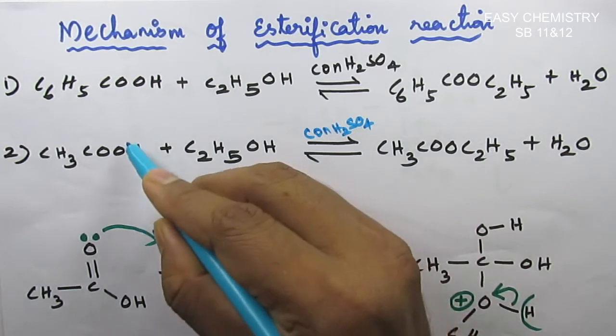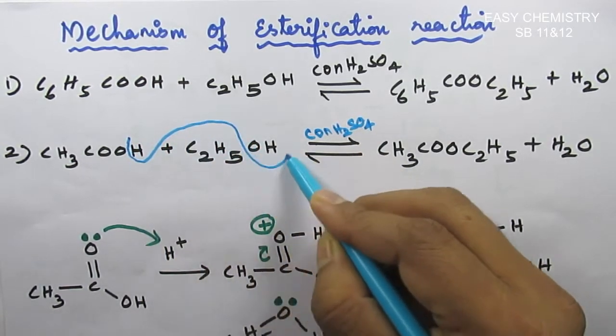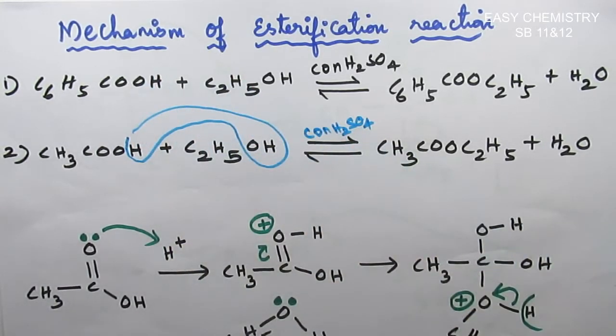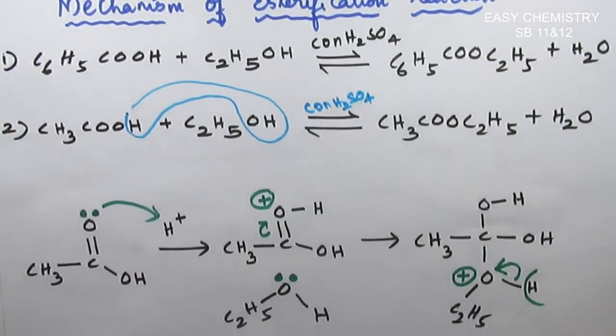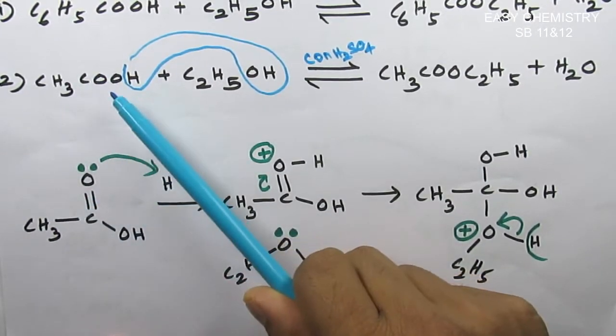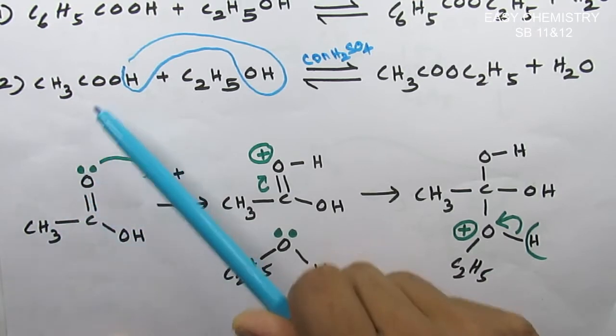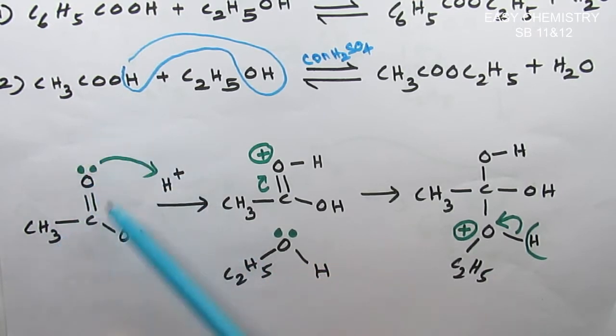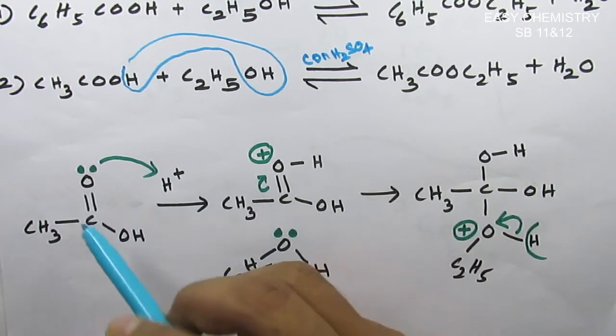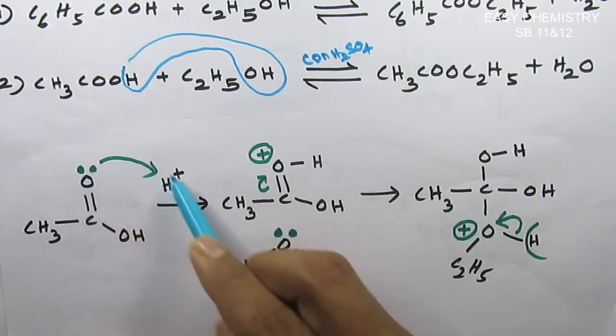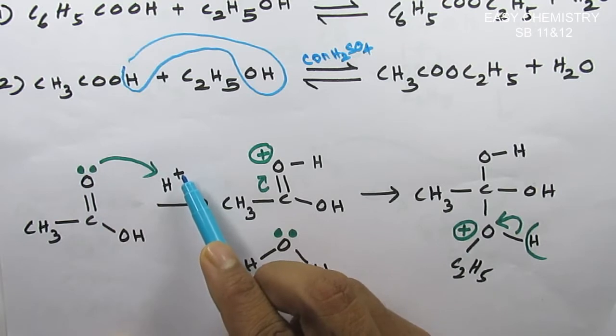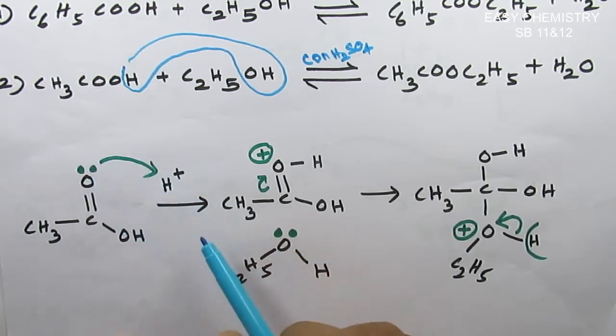Let's talk about the mechanism. First step: CH3COOH. The first step is H+ protonation. The double bond oxygen has two electrons. It moves here. The oxygen becomes positive. H+ attacks the carbonyl.